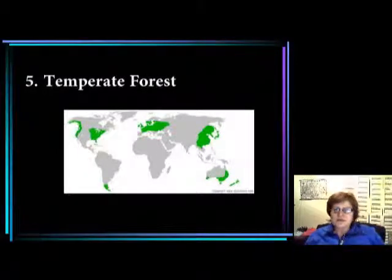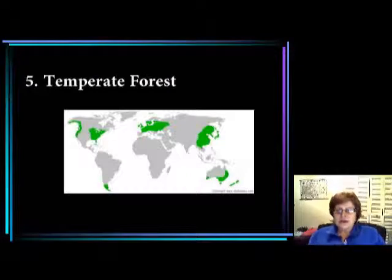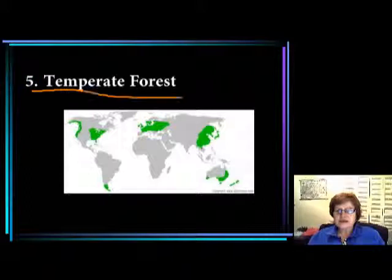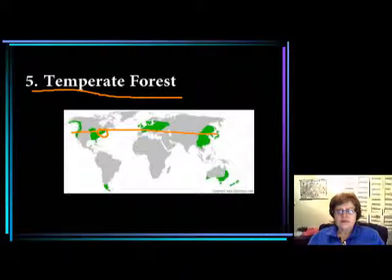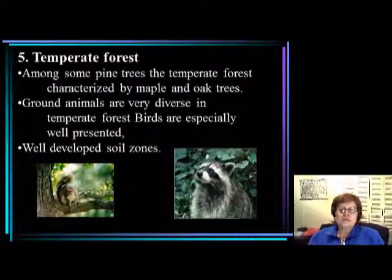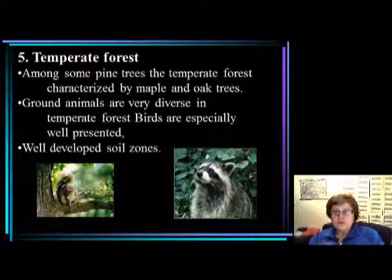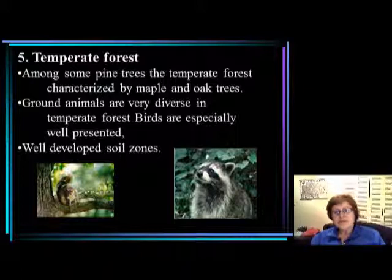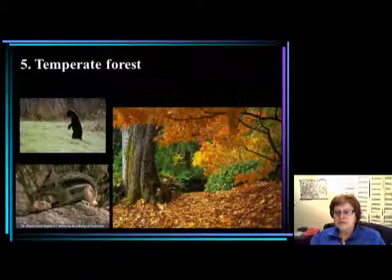The next segment in historical geology environments chapter starts with the temperate forest, which is our climate zone. It exists in Europe, Asia, and even in the southern hemisphere. In the temperate forest we mostly have maple and oak trees. The ground animals are very diverse and birds are especially well represented. Because the climate is rather humid, chemical weathering is more intense, so we have very well-developed soil zones.